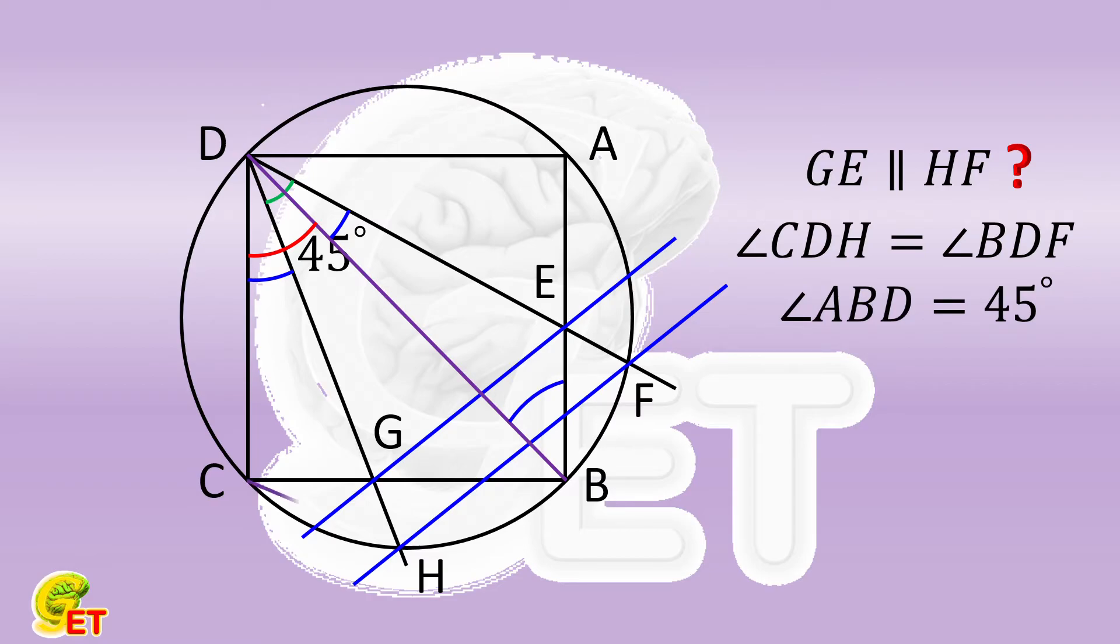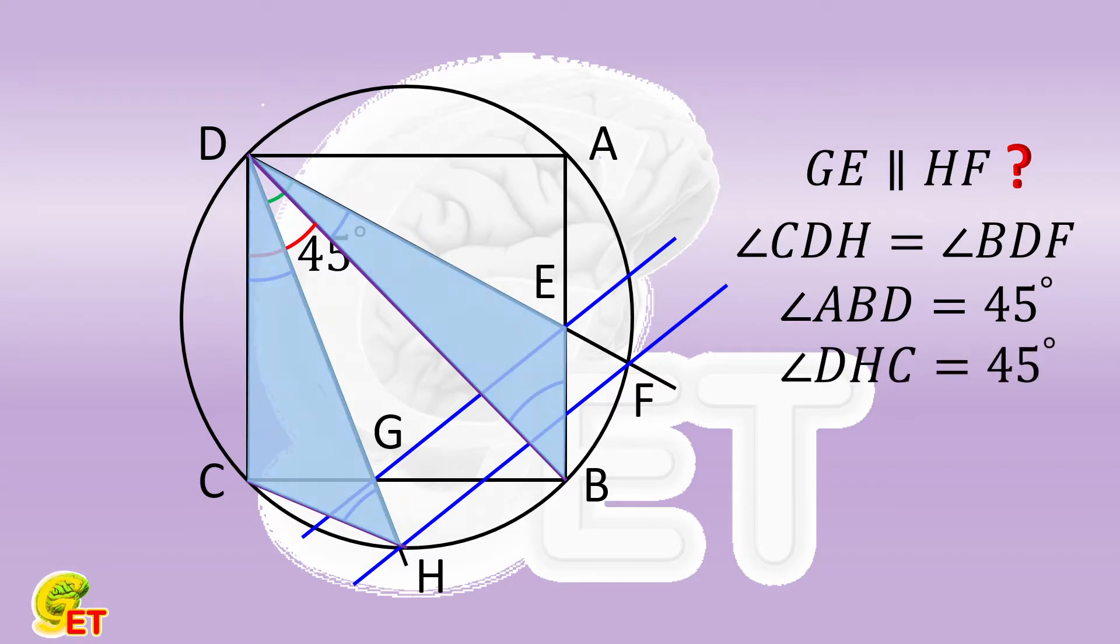If we connect CH, the angle DHC is the inscribed angle subtended by one side of the inscribed square of this circle, so it is also 45 degrees. Therefore we found a pair of similar triangles which are DEB and DCH.